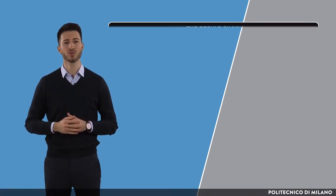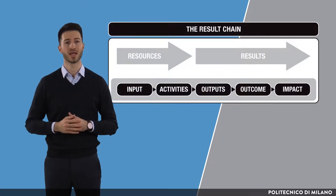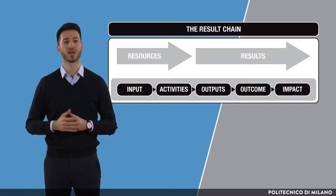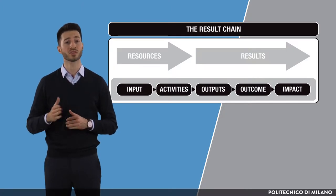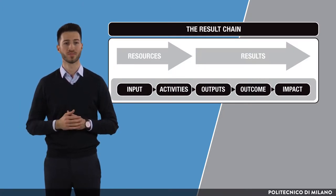In order to be able to put in place a reliable monitoring and evaluation system, a very useful tool is the result chain, as it introduces structure in the design, implementation and analysis of the process. It is a linear representation of the theory of change.